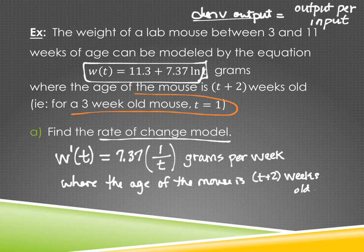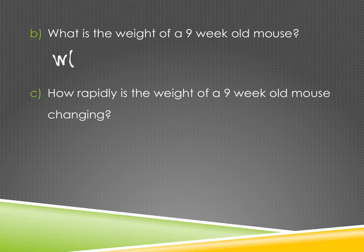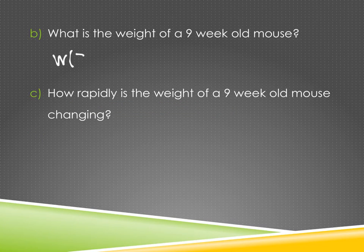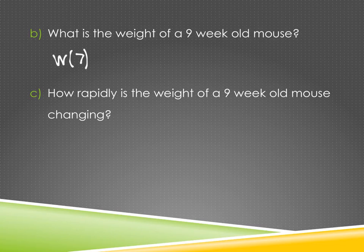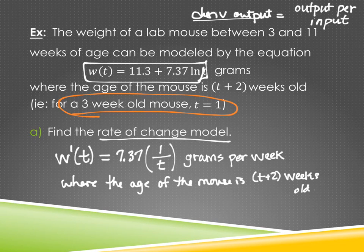Did I add to or subtract to? Be careful because it gave you an IE over there, remember? Yeah, a three-week-old mouse, I put in T equal one. So a nine-week-old mouse, I put in, I subtract two, I put in seven. Most of our inputs are not weird like that, so don't stress about that too much. That's why they gave you a lot of information to try to keep it clear. All right, so we've got W of seven. So grab your calculator, plug in 11.3 plus 7.37, and natural log seven, that's what you're doing.